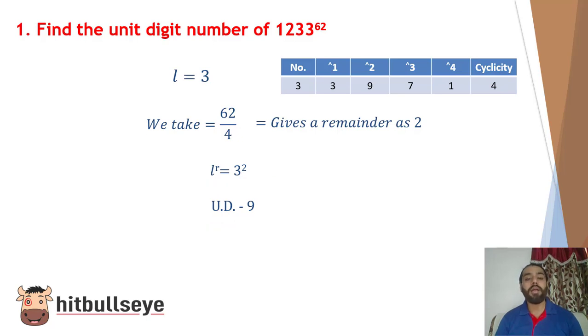Similarly, for example, if here we had 63, and we get remainder 3, we would do 3 raised to the power 3, and whatever the unit digit of that would be, that would be our answer.